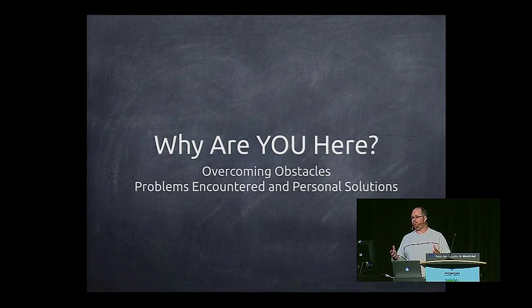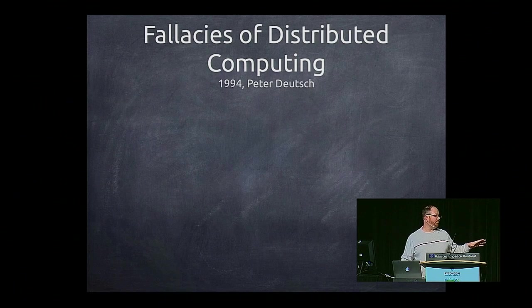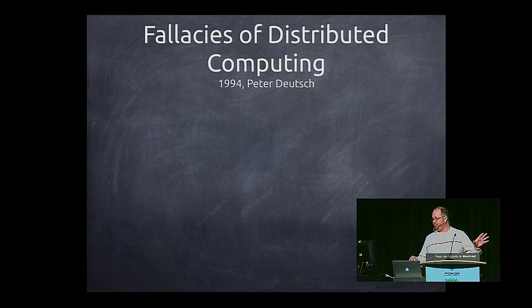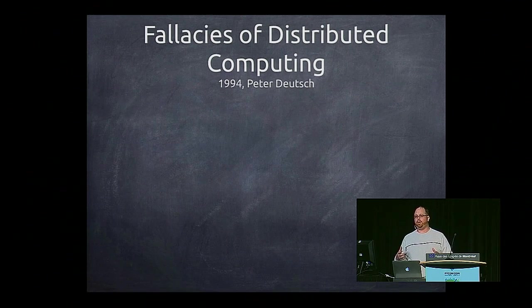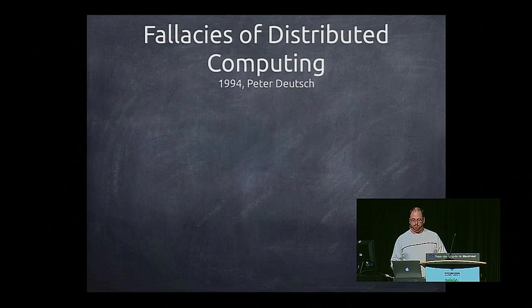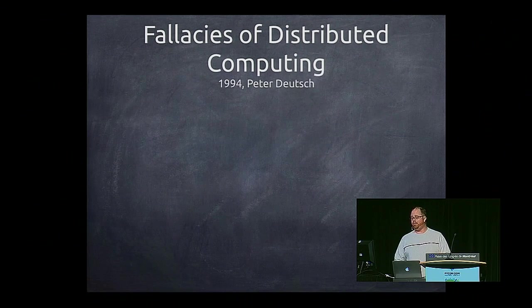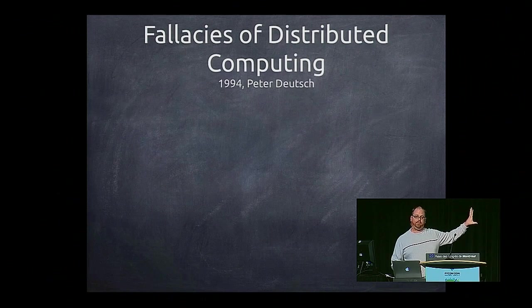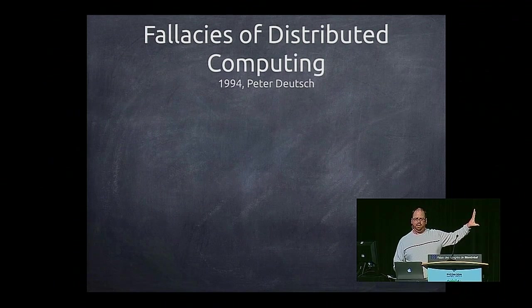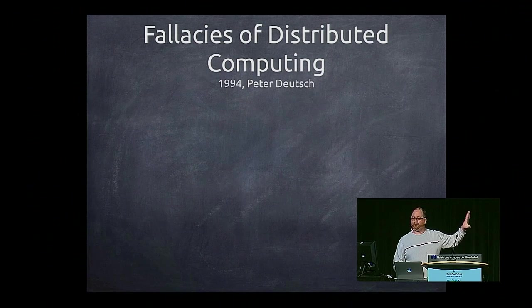Before I go too much into distributed computing, I have to bring up the fallacies of distributed computing from Peter Deutsch. He was working at Sun and came up with the seven fallacies that people make when working on distributed computing. I think it's important to step through each one to remind ourselves of the mistakes that are easy to make. I keep a copy of this in my office as a reminder, and even still I make mistakes from time to time.